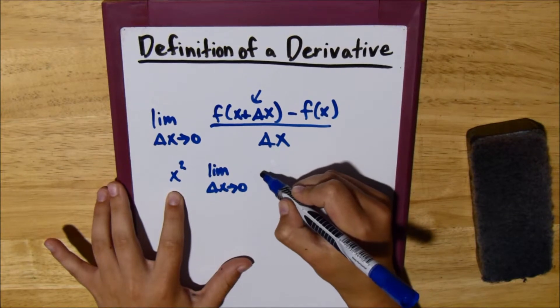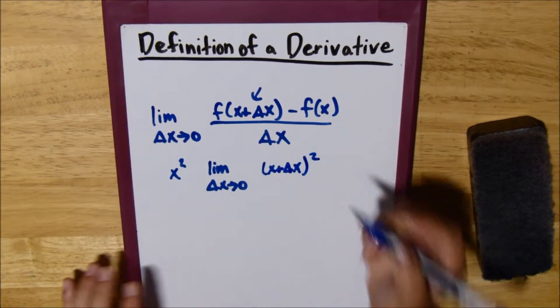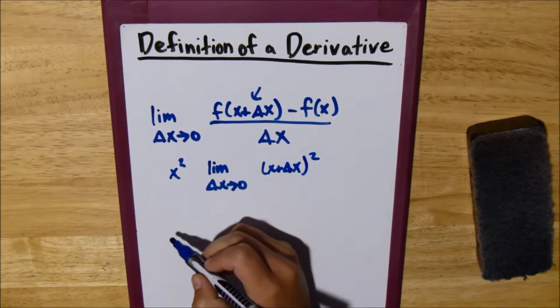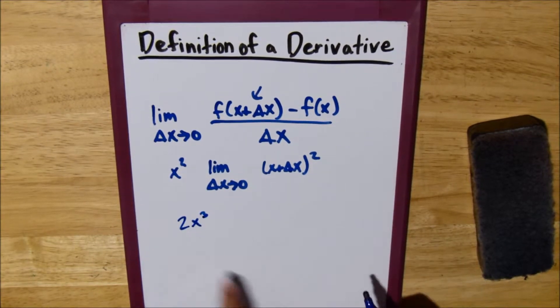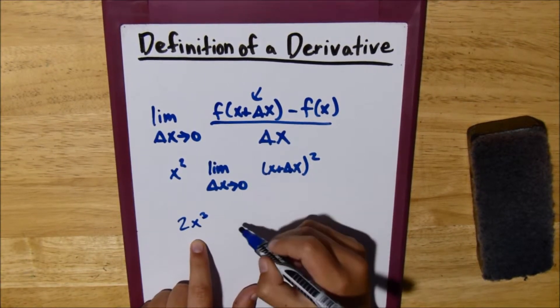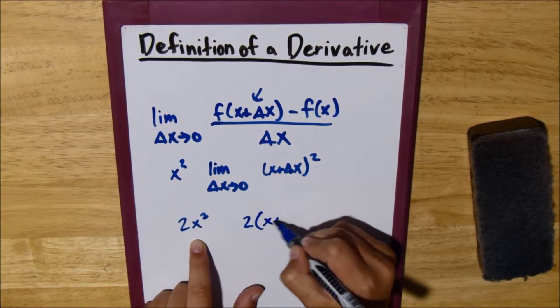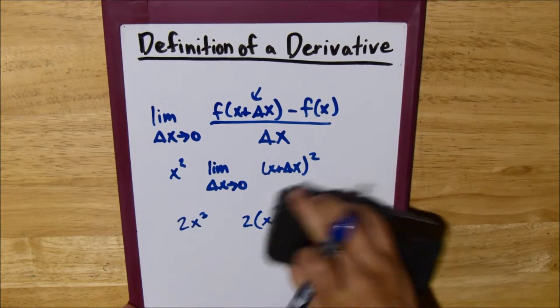So, you would put all of that, x plus delta x, you would square all of that. Does that make sense? So, like, if our equation was 2x cubed, you would replace the x with this stuff, so 2 times x plus delta x cubed. Really just that simple.